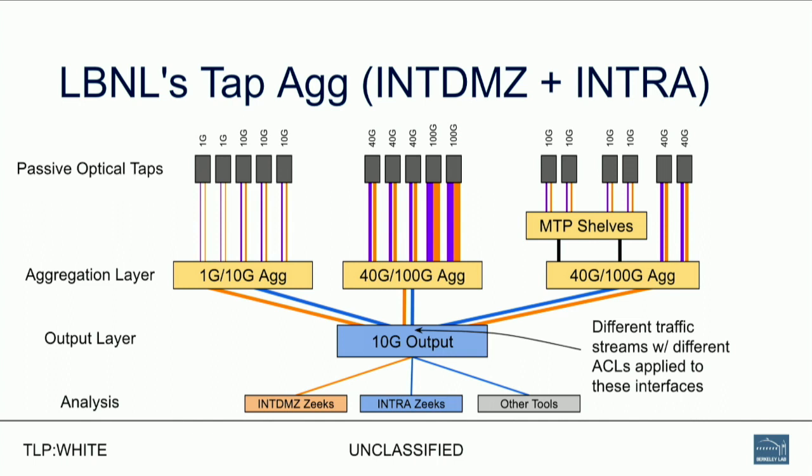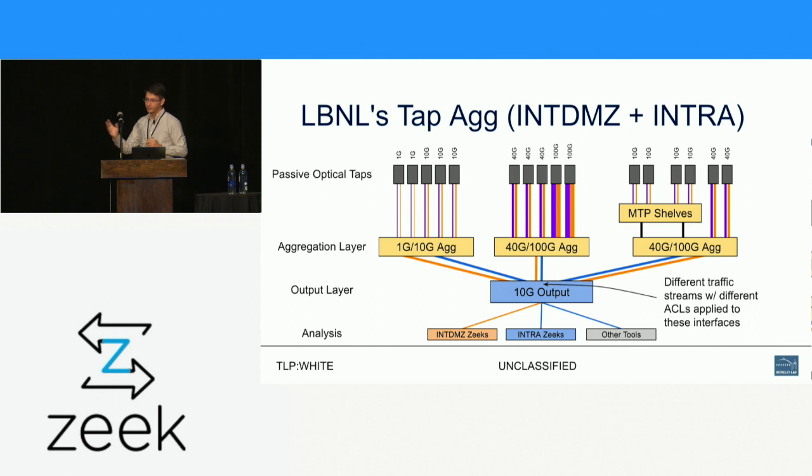The int-DMZ and intra-tap feed into a single tap ag infrastructure with an aggregation layer and output layer, but we're being more clever with how we group and tag interfaces. We have two different streams: the int-DMZ looking at traffic between our network and the outside world with a filter applied, and the intra stream looking only at traffic within our network for lateral movement detection. We can feed those to two different Zeek clusters within the same infrastructure.